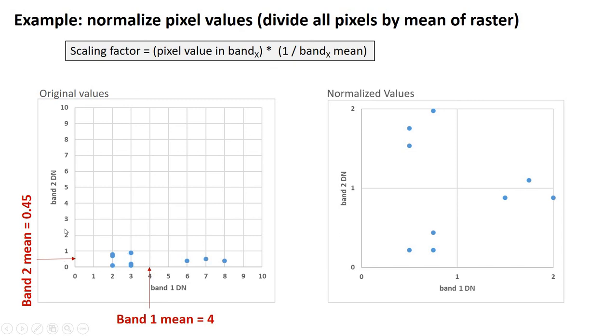In contrast, for band 2, we divided by 0.45. So, a pixel that had a value of 1, now actually has a value of 2. We've essentially increased all the band 2 values and we've decreased all the band 1 values so that they share a more common scale. And now we can see that, really, these three groups are quite separate by any metric.